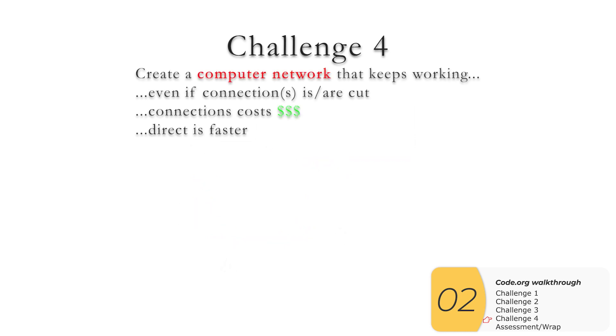That brings us to the last challenge, which is to create a computer network that keeps working even if connections are cut, remembering that connections cost money. And we have a new thing here, which is that direct is going to be faster. So this combines everything we did before plus one. So there's no one right solution here. A solution for 5 might look like this. A solution for 6 might look like this. As long as you're balancing these three things, you're good. And this is what we have to do in the real world when we design computer networks.